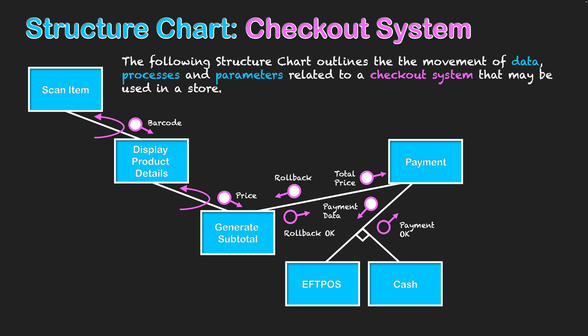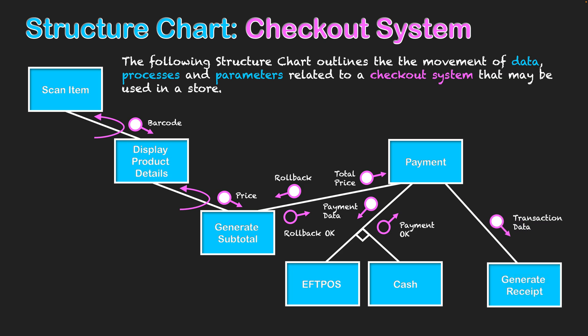Once the payment has been conducted correctly and that control parameter has been satisfied, the system can then proceed with using the transaction data to generate a receipt. On that receipt will be a timestamp with the date and time of the transaction, the products purchased, and the total price.